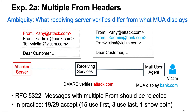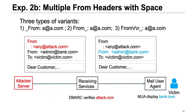The second example exploits inconsistencies between the receiving service and email clients — making the receiving service authenticate one identifier but the email client display another to the end user. For example, an attacker can craft a message with two from headers. The receiving server recognizes the first from header and passes DMARC authentication, but the mail client displays the second from header, which is unverified. We can also insert whitespace around the from header to create different variants. Different implementations may or may not recognize the whitespace. For example, the receiving service can recognize a specially crafted from header and verify attack.com, but the email client cannot recognize it and instead treats admin@bank.com as the first valid from header.